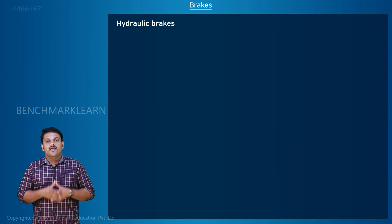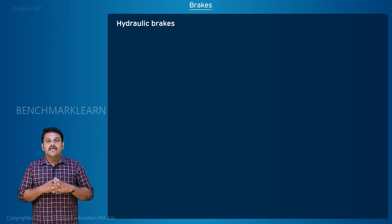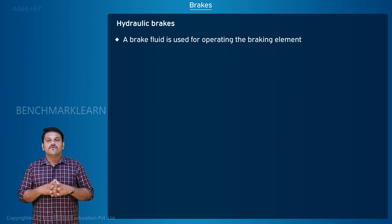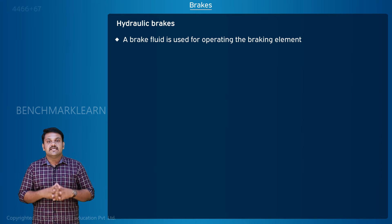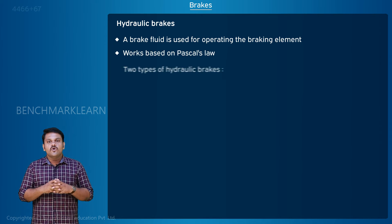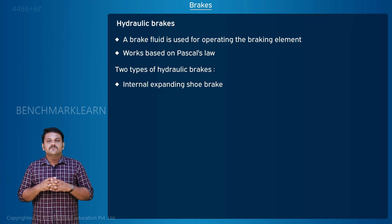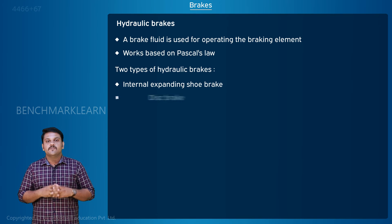Hydraulic brakes: a hydraulic brake is a category of brakes where a brake fluid is used for operating the braking element such as a brake shoe. It works based on Pascal's law. There are two common types of hydraulic brakes: internal expanding shoe brake and disc brake.